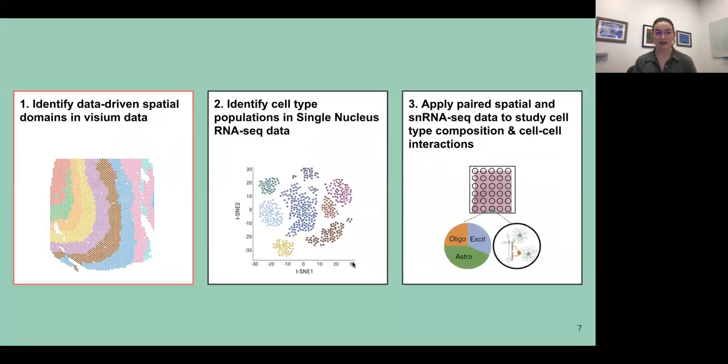So for the outline of the rest of the talk, first, I will talk about identifying data-driven spatial domains in the Visium data. Then I'll move on to talking about cell type population identification in our single nucleus RNA-seq data. And third, bring those two datasets together and talk about the applications of paired spatial and single nucleus RNA-seq data to study cell type compositions and cell-to-cell interactions.